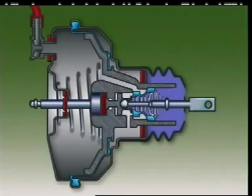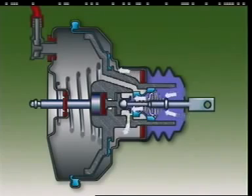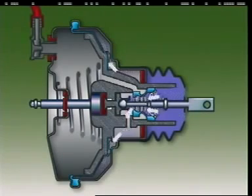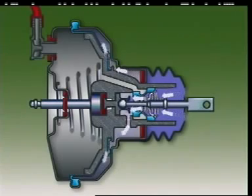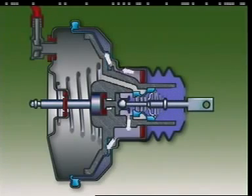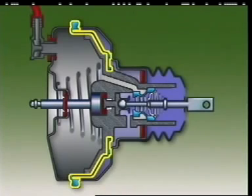Further movement of the pushrod and plunger moves the air valve away from the control valve to open the atmospheric port. Air at atmospheric pressure comes into the air filter and passages and enters the chamber at the rear of the diaphragm.